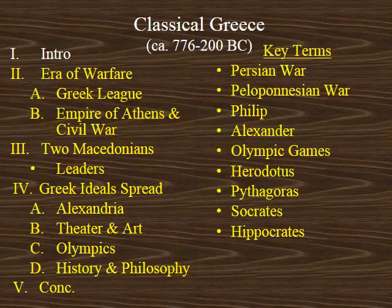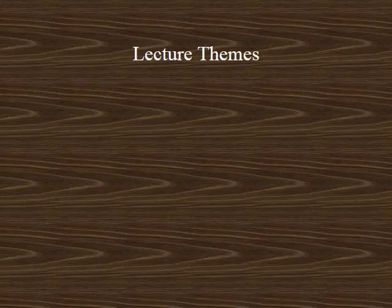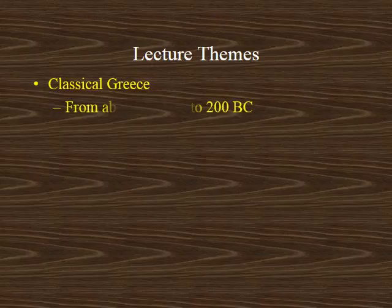Hello and welcome to lecture number four. The topic today will be Classical Greece. There are a few themes to be addressed in this lecture. The rough time period for Classical Greece would begin about 776 BC with the first Olympic Games to about 200 BC.